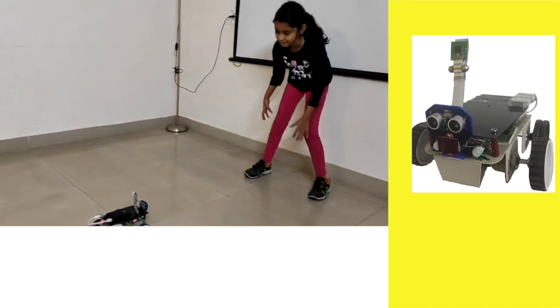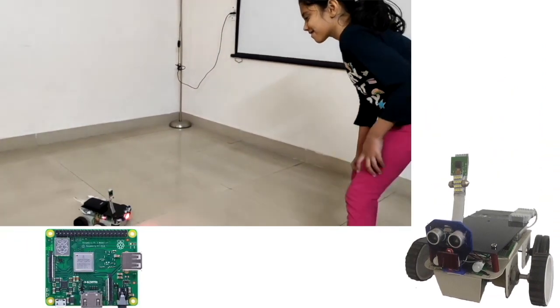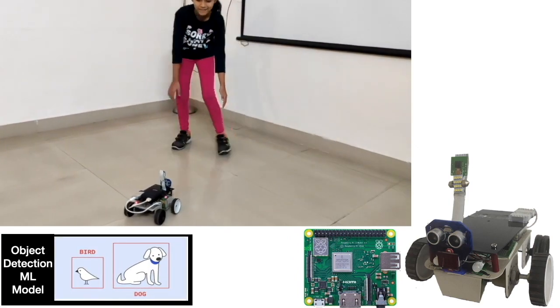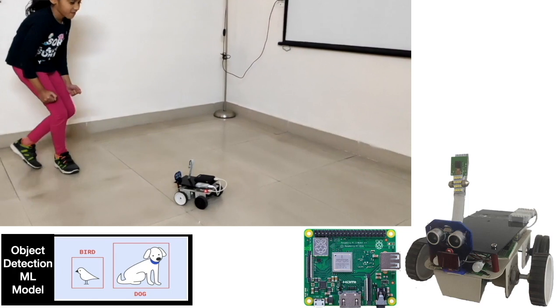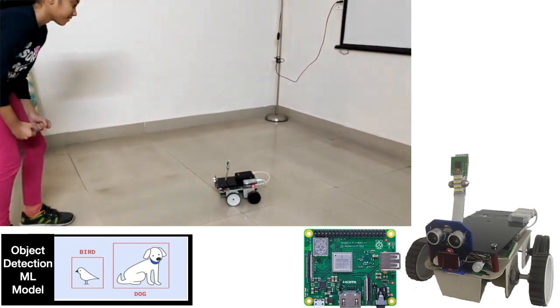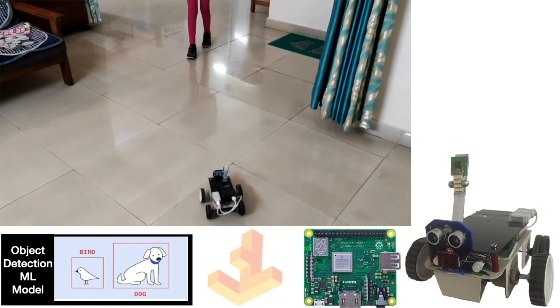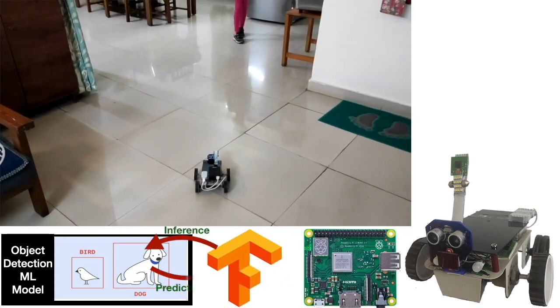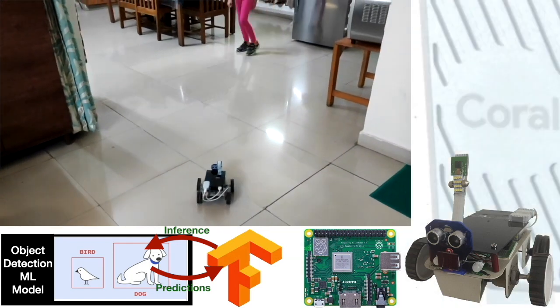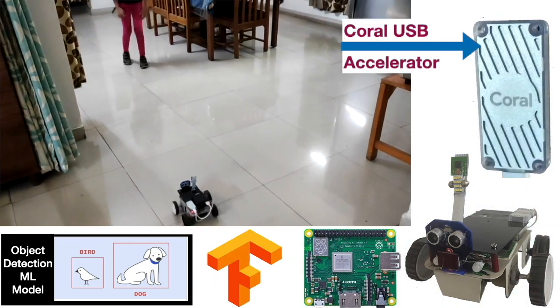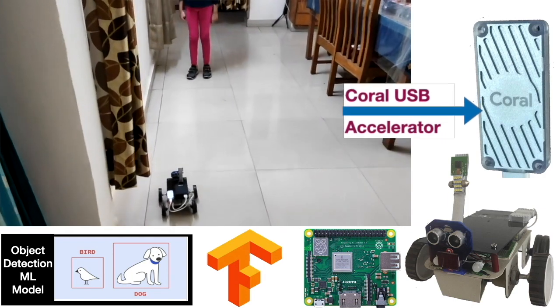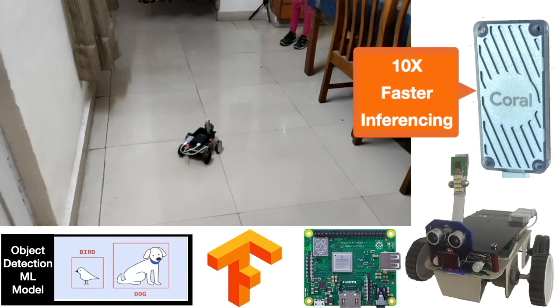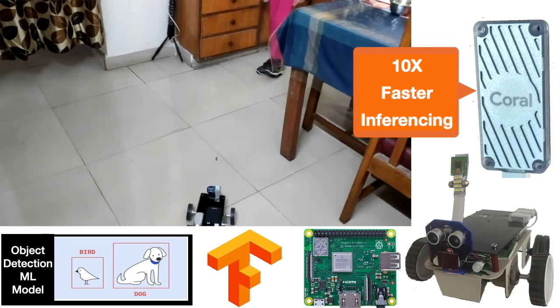This human-following robot is made using a Raspberry Pi 3A+. It runs a pre-trained machine learning model for object detection. The model can detect 90 types of objects including a person. TensorFlow Lite Interpreter is installed on Raspberry Pi which interacts with the model. And to accelerate the inferencing process, Google Coral USB Accelerator is attached to Raspberry Pi. With Coral attached, the robot can process up to 10 frames per second and detect objects in the frames.